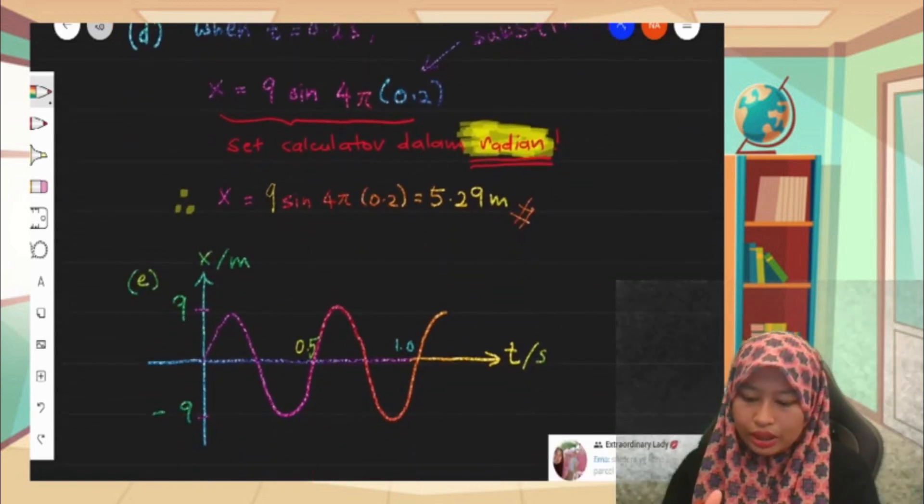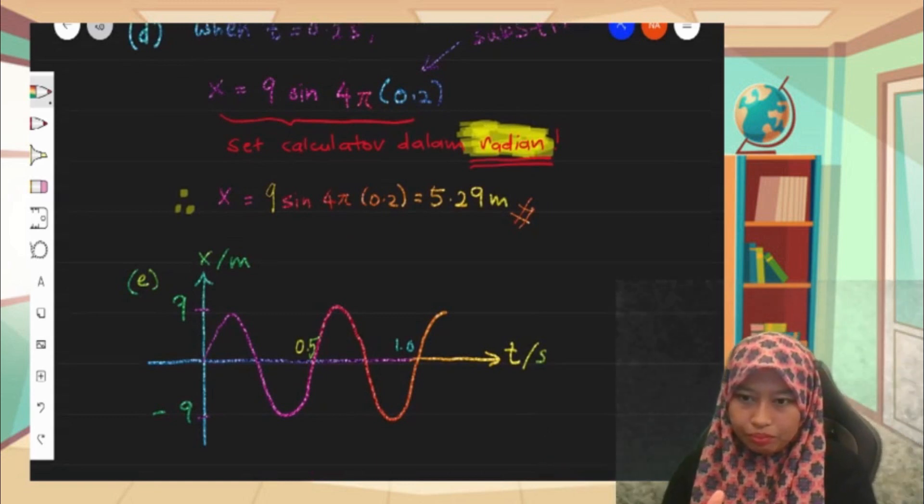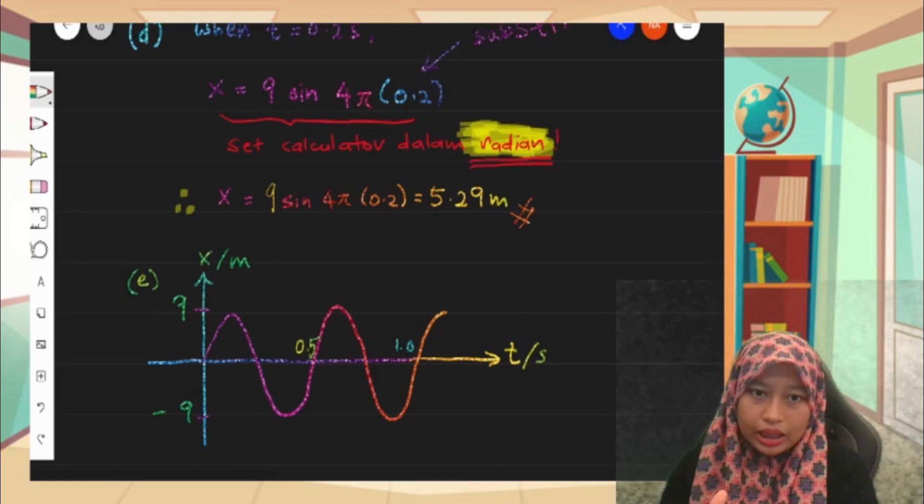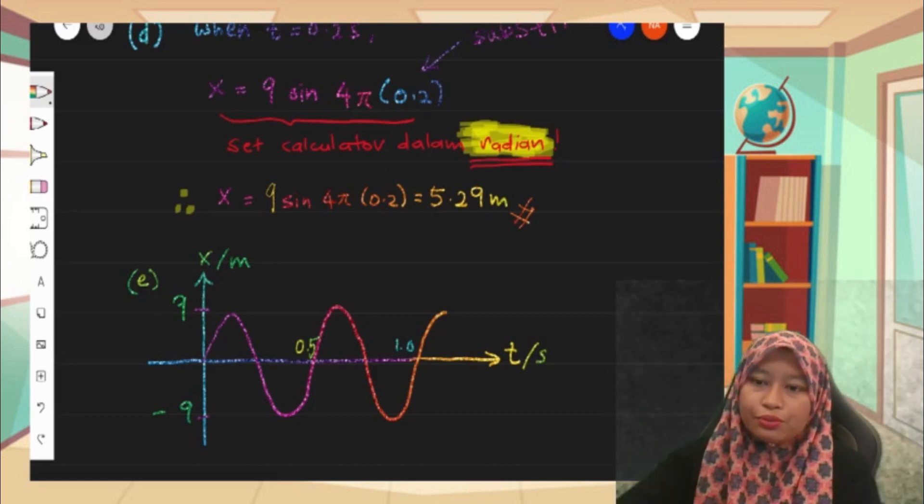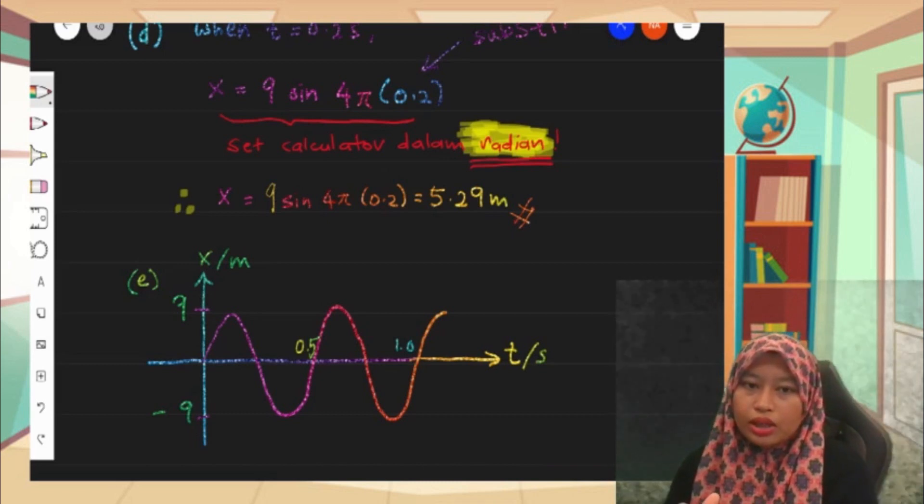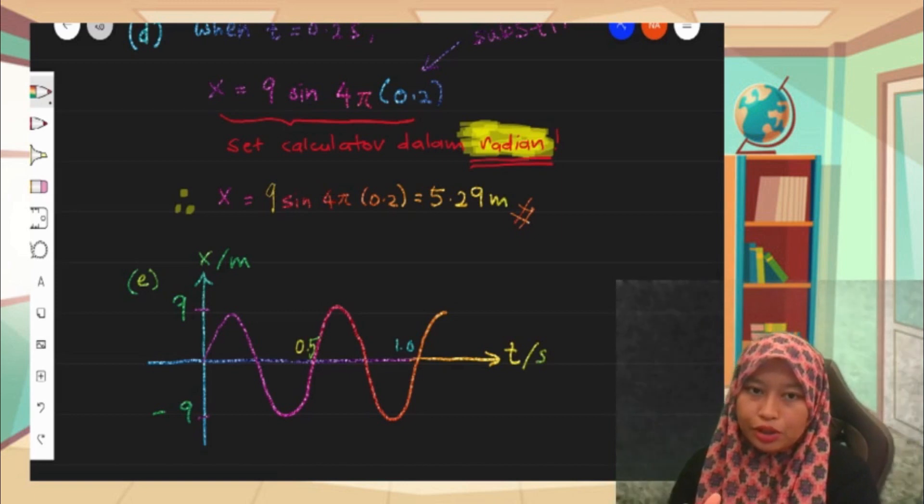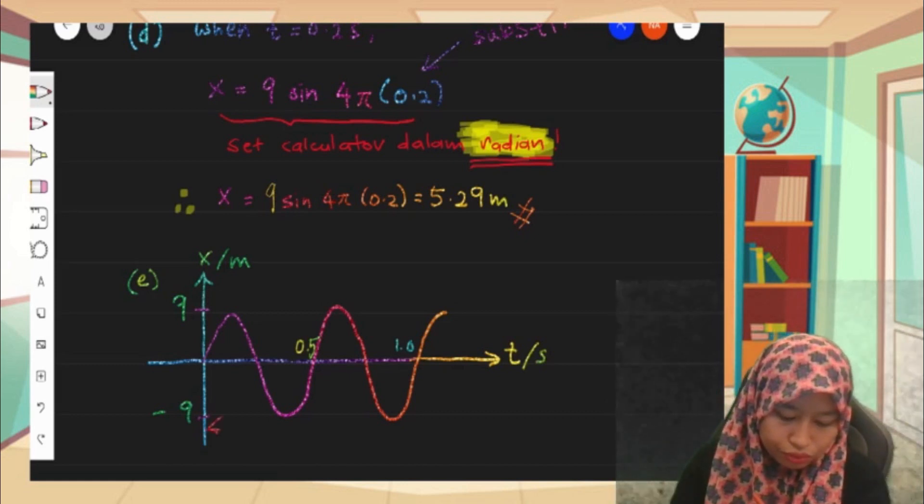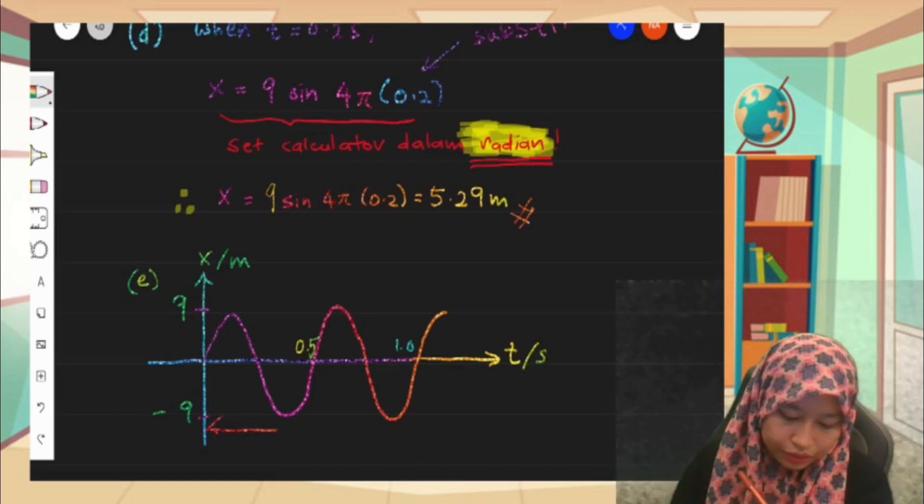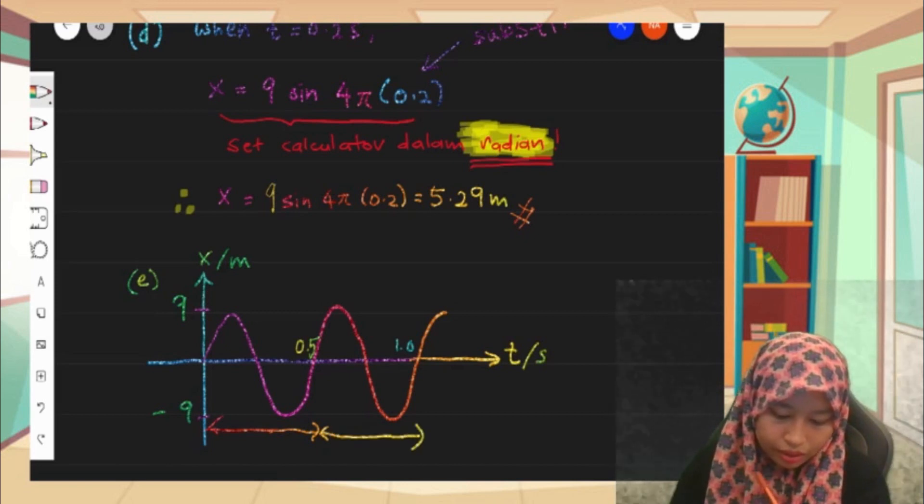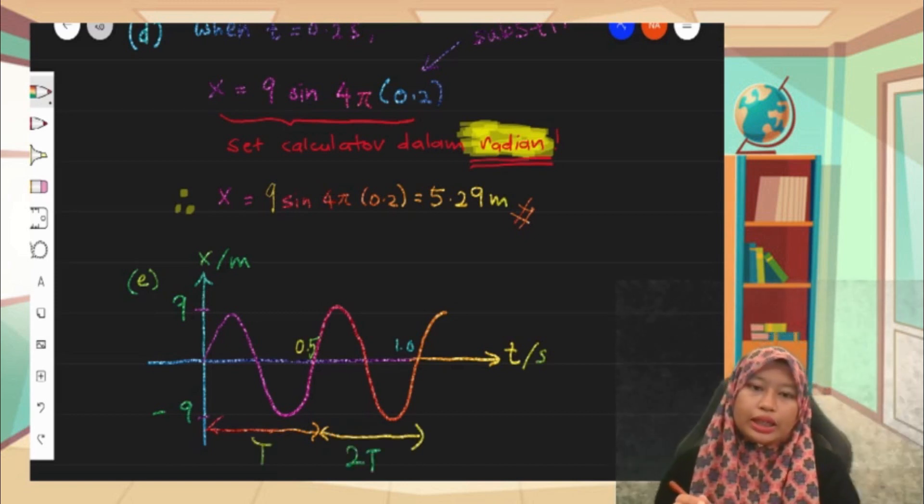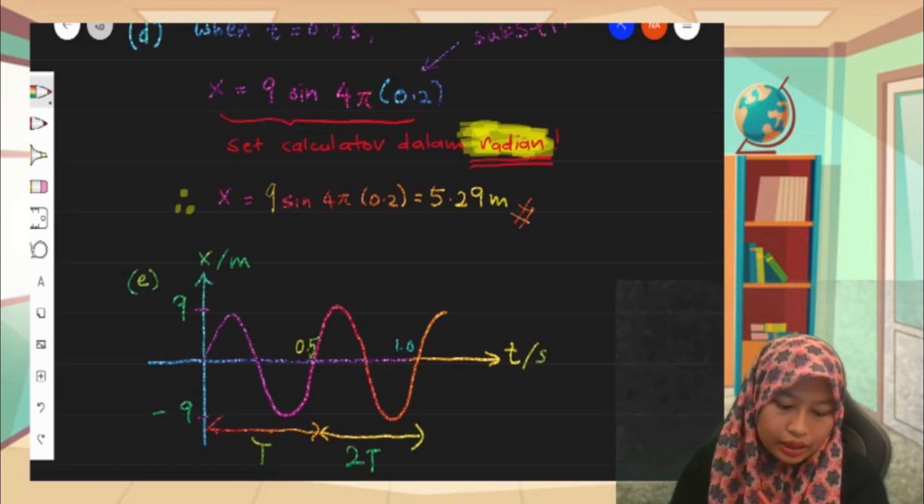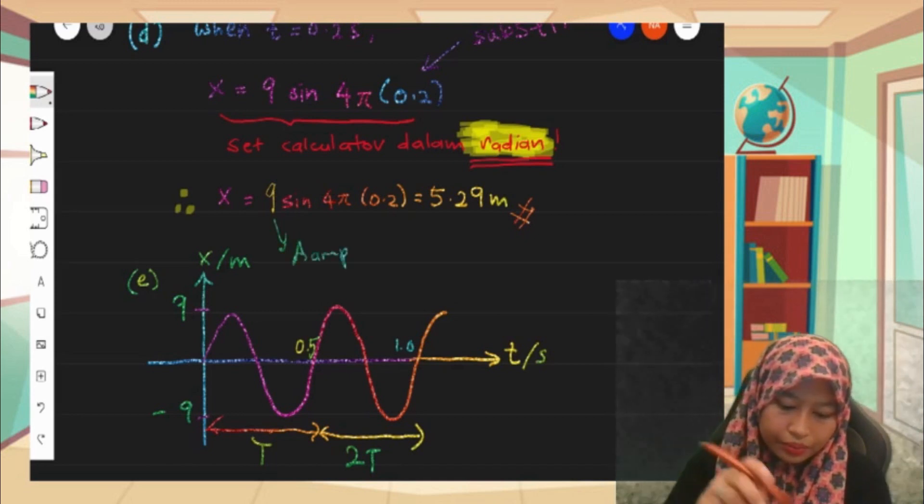So the last one is E. We need to sketch the graph of displacement against time. So displacement against time. So I sketch for two complete oscillations here. Sketch for the two complete oscillations here. This is one complete oscillation, this is two complete oscillations. For the amplitude, I just take the value from the equation. So this is amplitude.